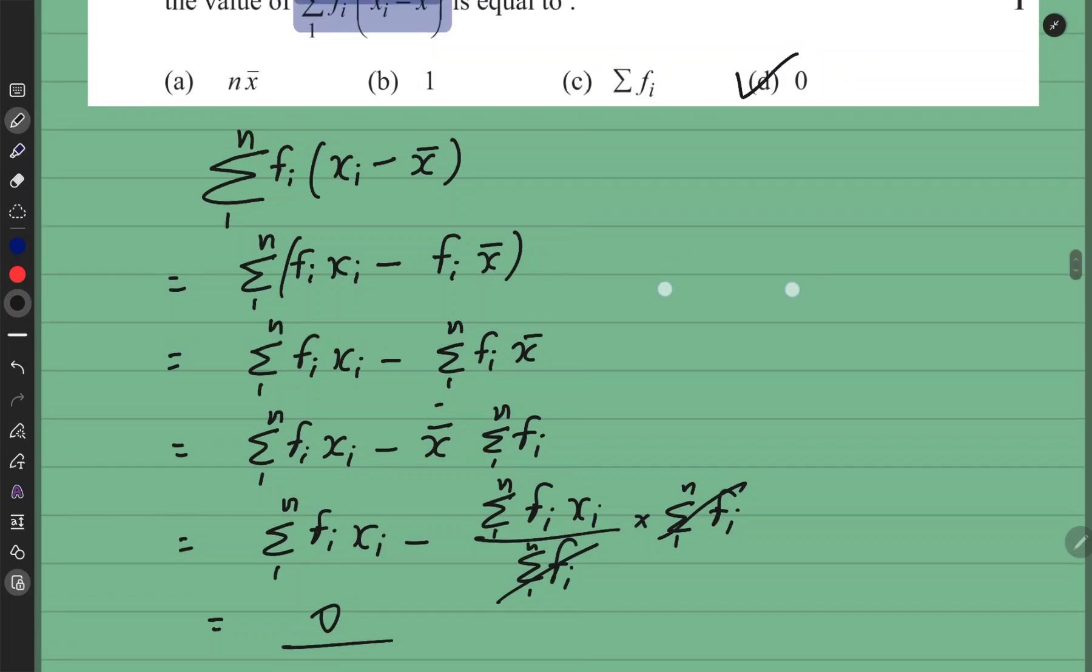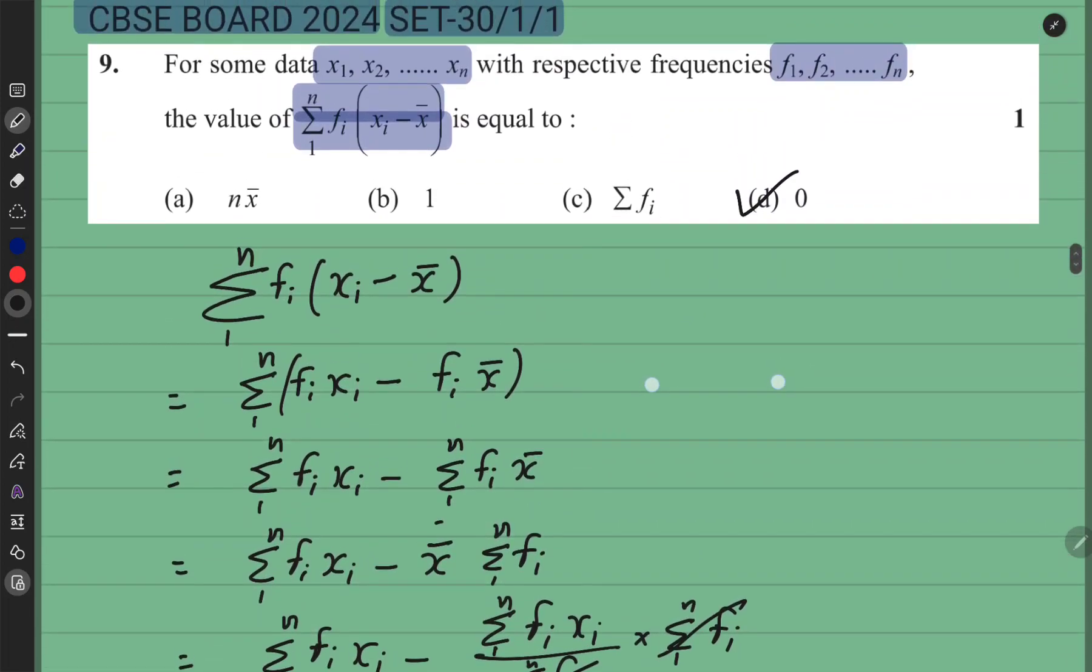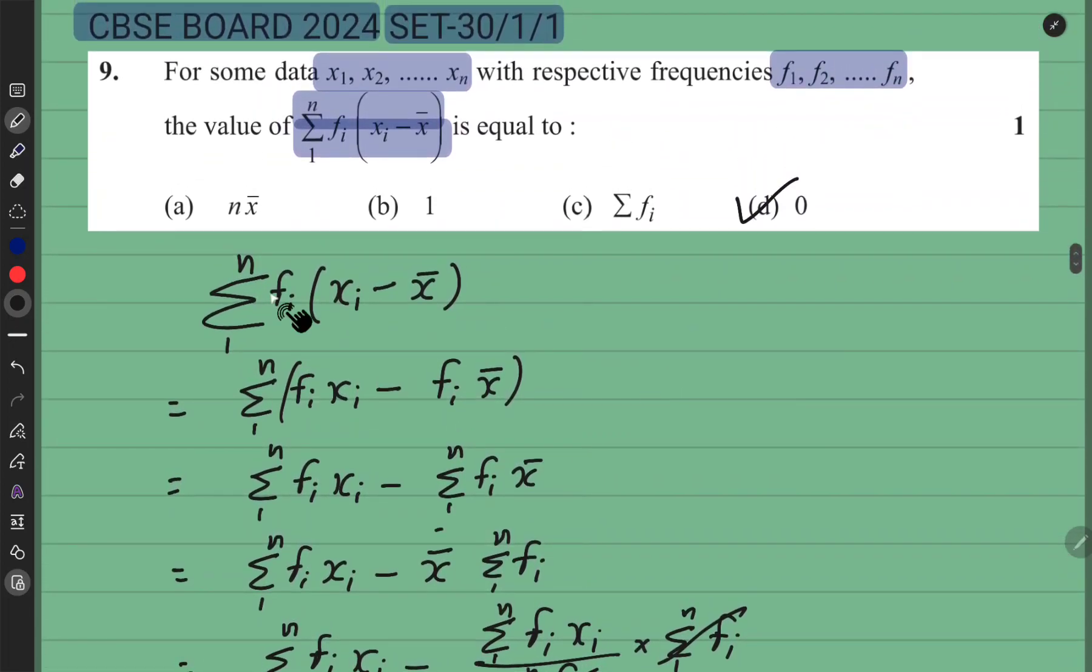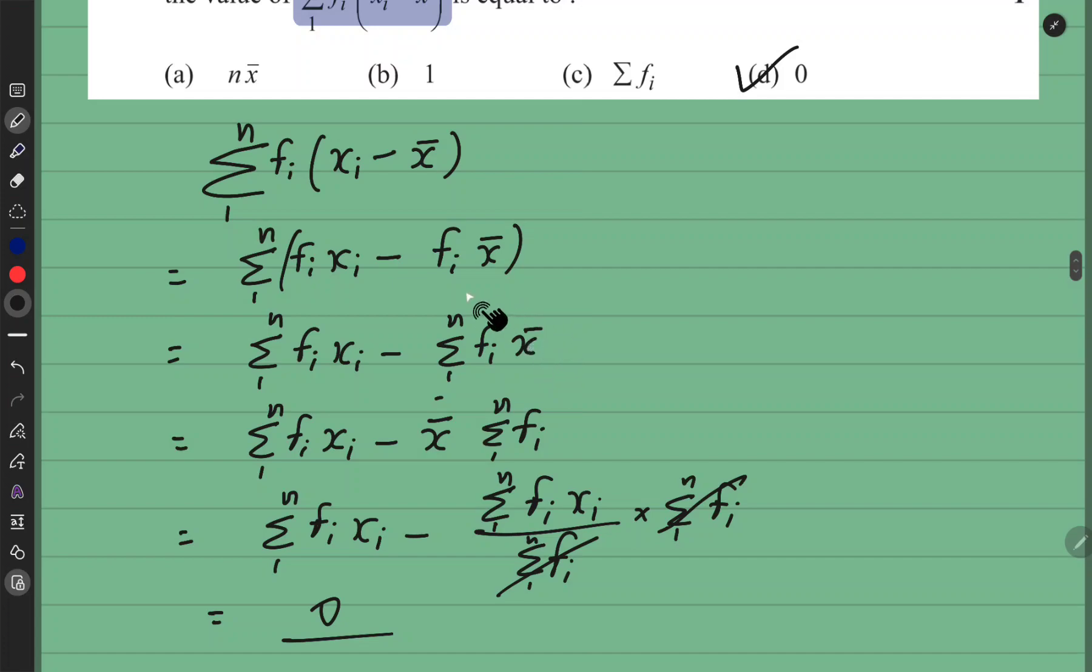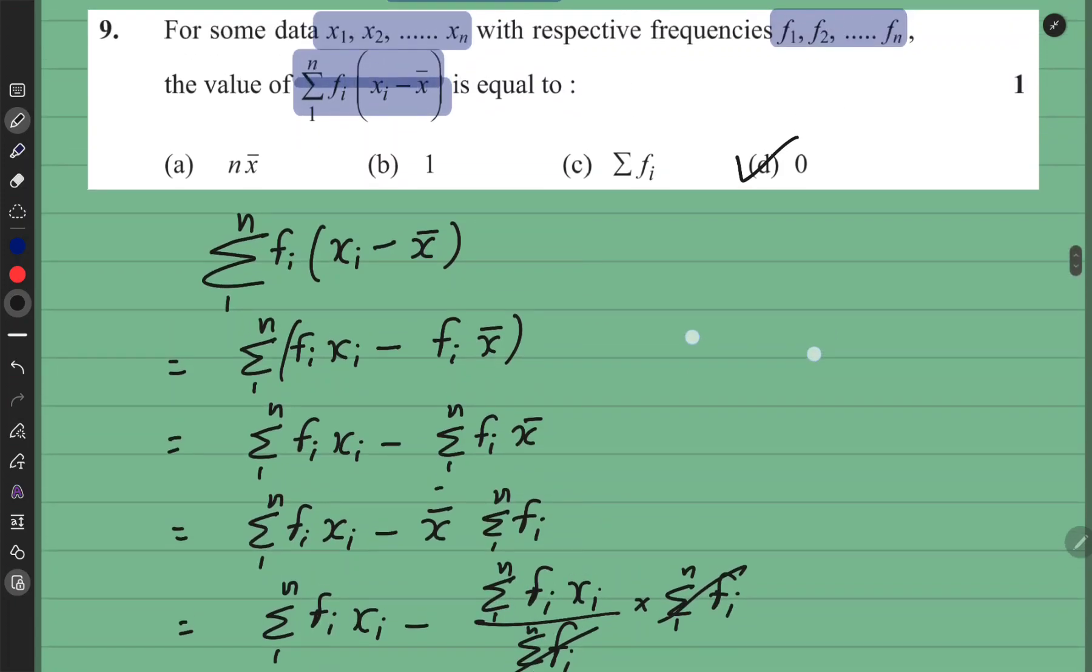Tau option koon sa? Sa hi ho ga. Option D. Thik hai? Tau is tarah se isko solve karna tha. Simplify karna tha. Fi anndar multiply kiya. Tho summation ko distribute kiya. Tho uske baad x bar fix value hai. Tho bhaar ajaegi summation se. Or x bar ka formula lagaya. Ye summation fi cancel. Or yeh dhono same hai. Tho minus hoke zero ajaegah.